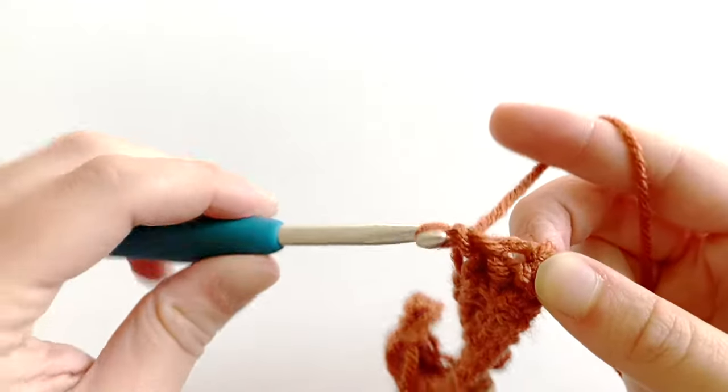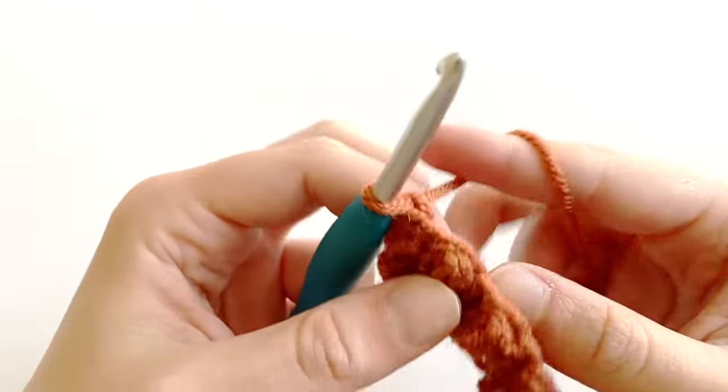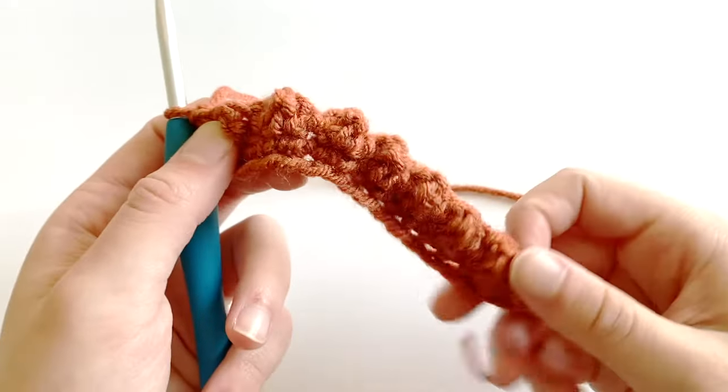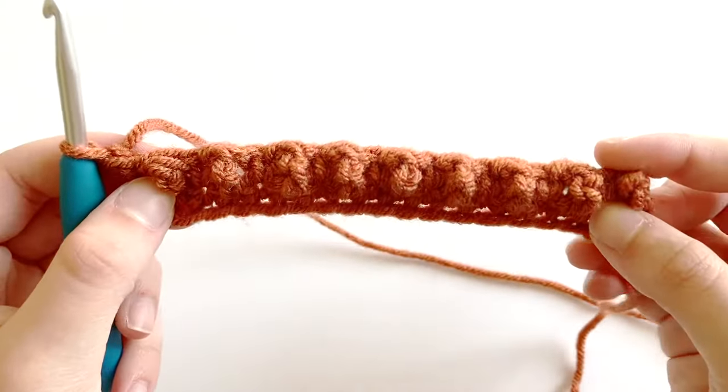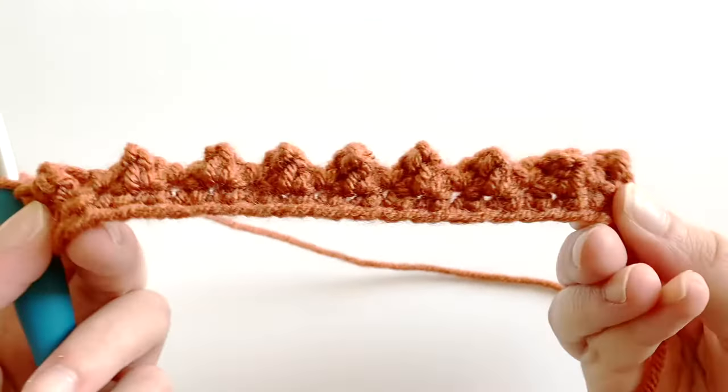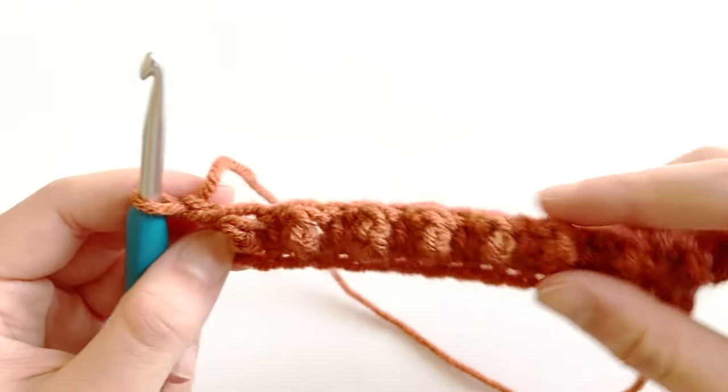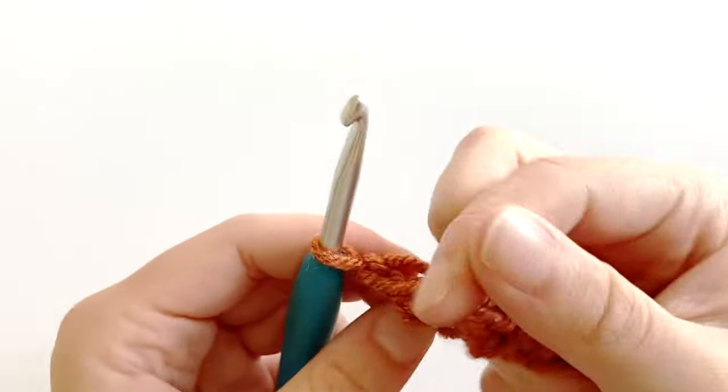Okay, and work one single crochet in that last stitch. So now chain one and turn your work, and this will be the right side of the work because it has all of these fun little bobbles. So now you're going to want to work one single crochet in every stitch.